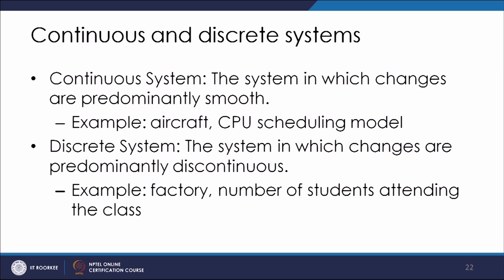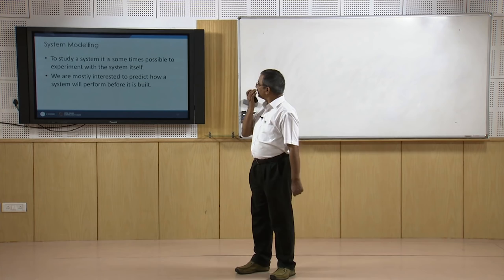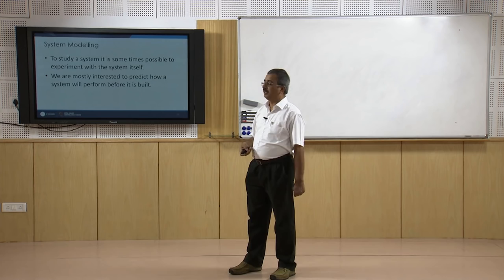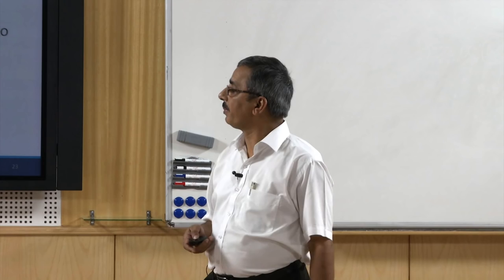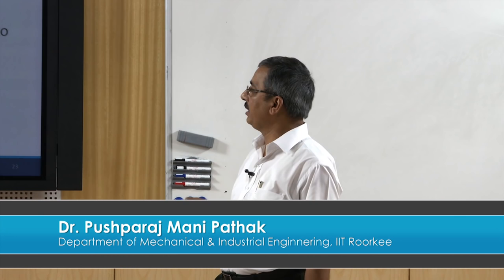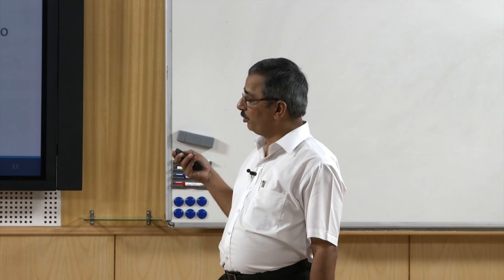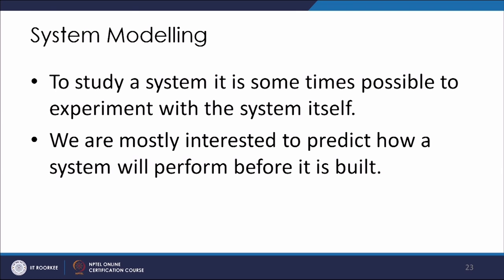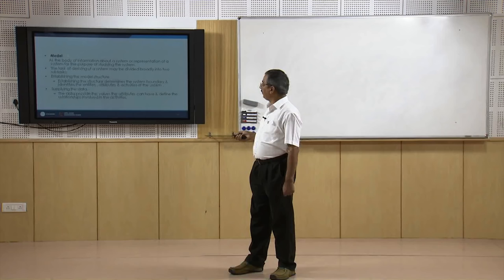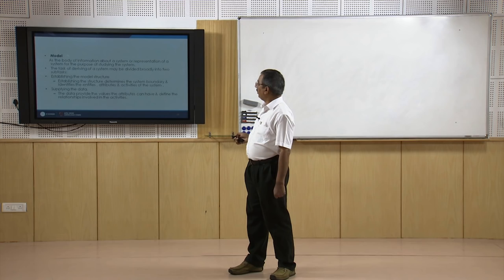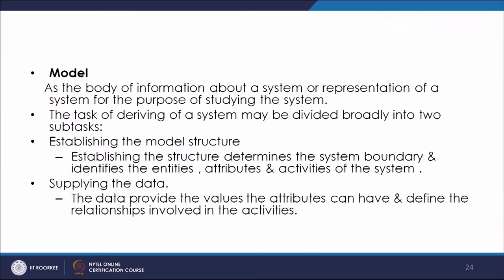After studying the system's characteristics, system modeling — as stated at the beginning — aims to predict the behavior of the system. While it is possible to study the system by observing the system itself, the interest is mostly to study behavior before the system is built. For this, we create a model, which is a body of information about the system or a representation of the system for the purpose of studying it. Model building consists of two stages: establishing the model structure and supplying the data.